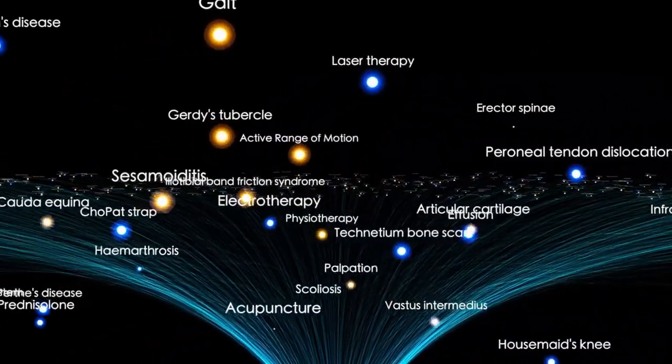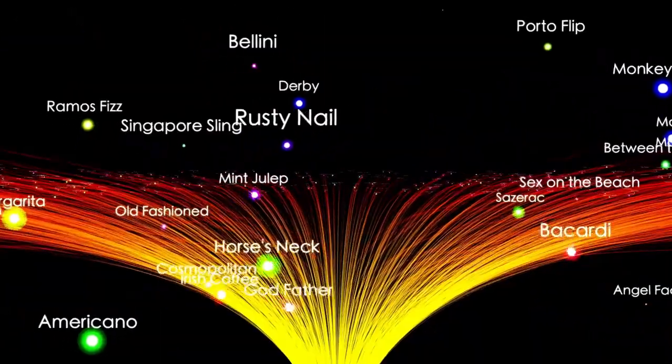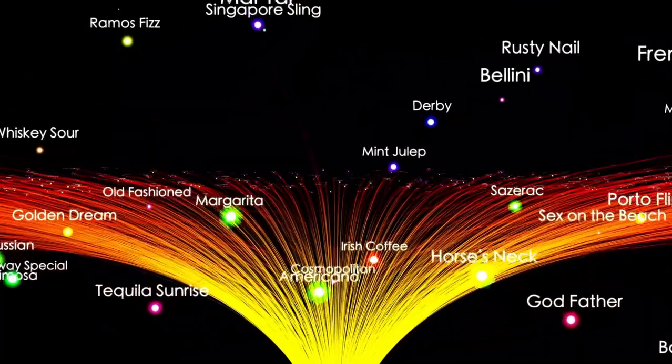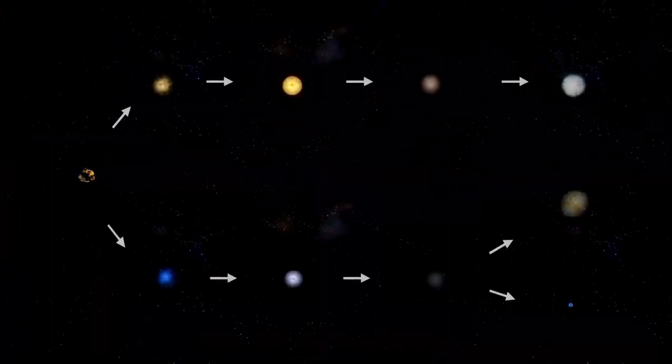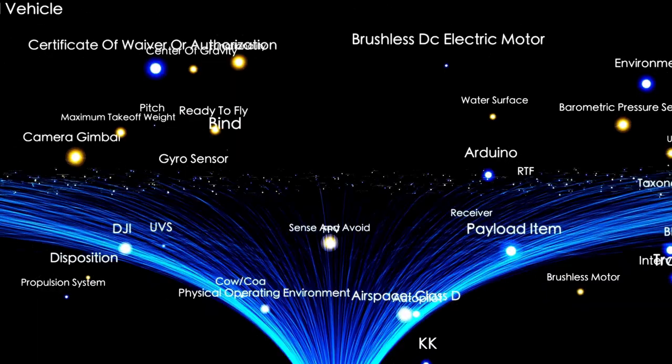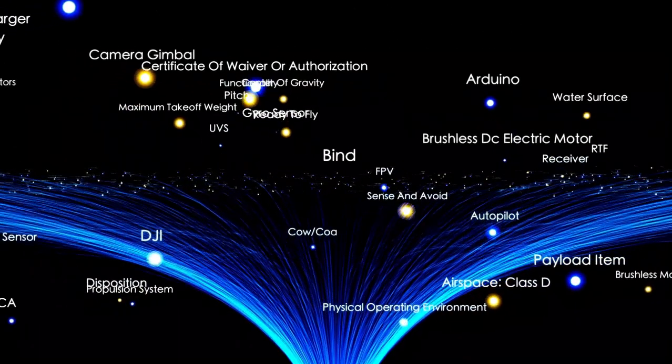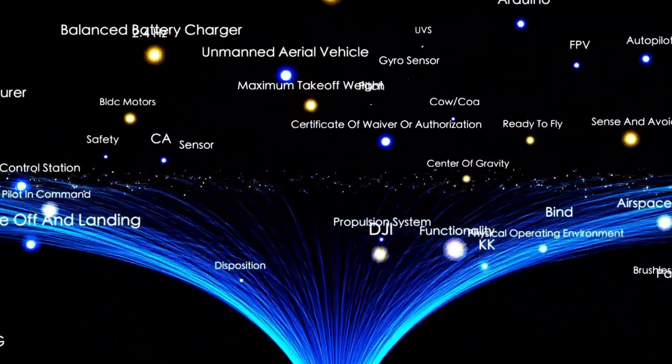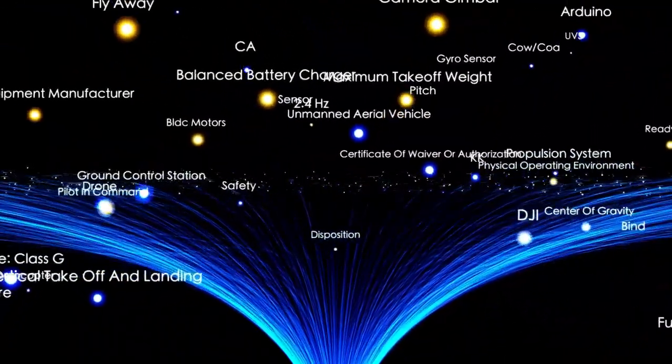This mass loss was significant, especially considering that Betelgeuse continuously loses mass at a rate far greater than that of our sun. The scale of this mass ejection and the subsequent dimming sparked discussions about whether this event could be a precursor to a supernova explosion. The proximity of Betelgeuse adds to the intrigue. Yet the question remains: What does this dimming event portend for Betelgeuse's future?